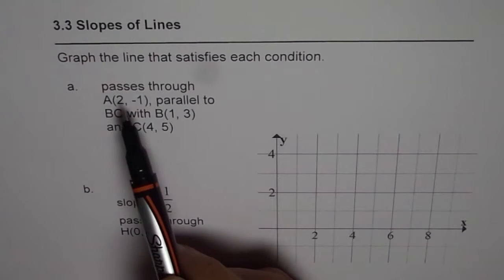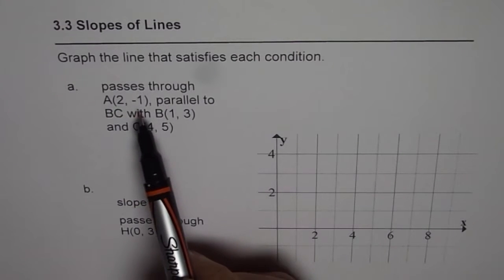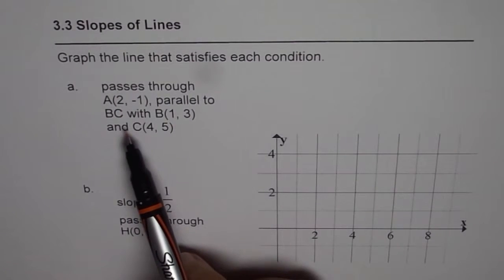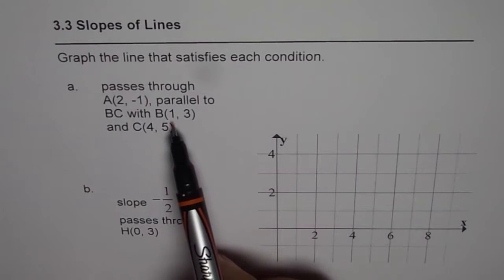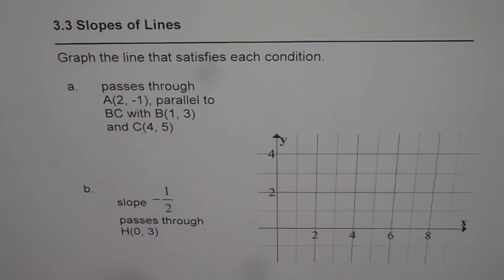The first one passes through A(2, -1), parallel to BC with B(1, 3) and C(4, 5). The second one has slope -1/2 and passes through H(0, 3).